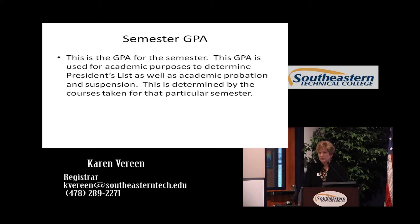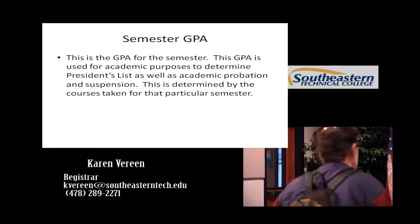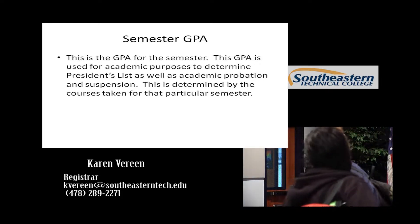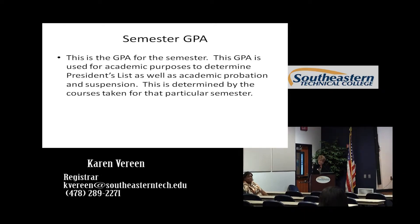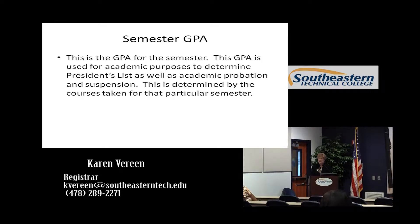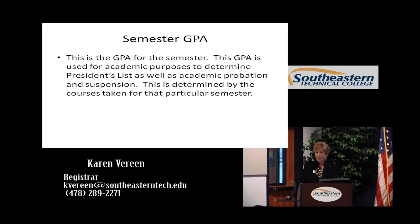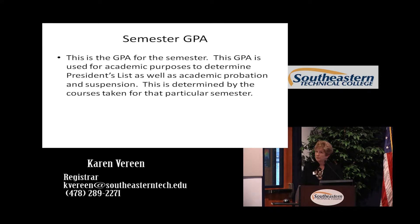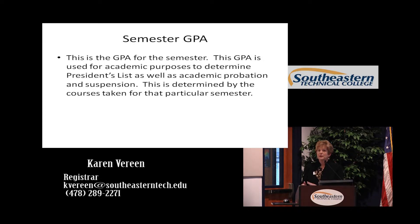You've heard of semester GPAs, cumulative GPAs, and program GPAs. The semester GPA is your academic GPA for this semester. This is what we base our President's List on — if you have a 3.75 GPA, you're on the President's List. If you fall below a 2.0, you'll be placed on academic probation. If you come back the next semester and go over a 2.0, you're back in good standing. If you fall below a 2.0 for two consecutive semesters, you'll be placed on academic suspension. Keep in mind I'm talking about academics. Students often get confused between academics and financial aid — financial aid uses different rules and regulations, so financial aid suspension or probation may involve a totally different GPA than your academic one.